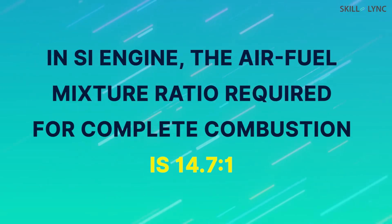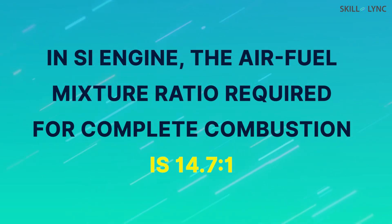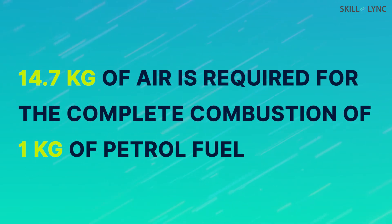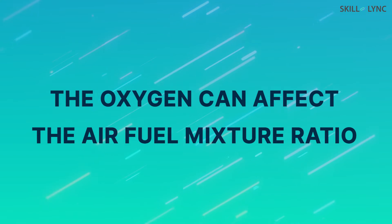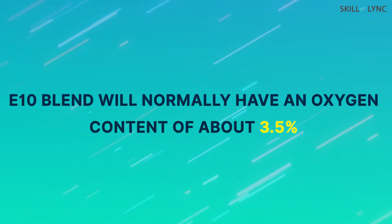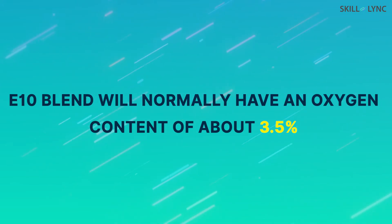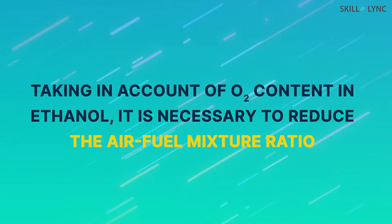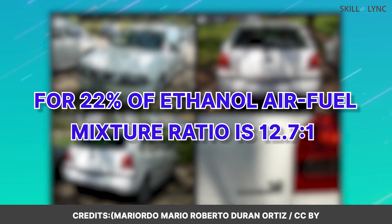In a normal SI engine, the air-fuel mixture ratio required for complete combustion is 14.7:1 — that is, 14.7 kg of air is required for the complete combustion of 1 kg of petrol. But in the case of ethanol, the oxygen present in it can affect the air-fuel mixture ratio at which the engine is operating. For example, an E10 blend of fuel will normally have an oxygen content of about 3.5%. So, taking into account the oxygen content in ethanol, it is necessary to reduce the air-fuel mixture ratio. For example, a Volkswagen Golf running on 22% ethanol has 12.7:1 as its air-fuel mixture ratio.